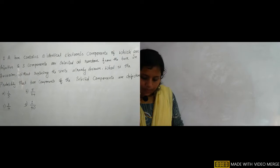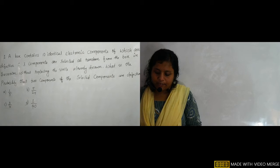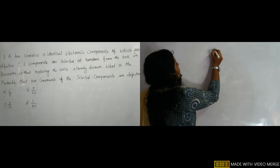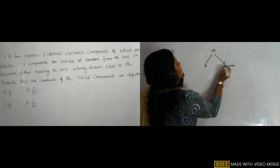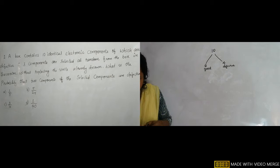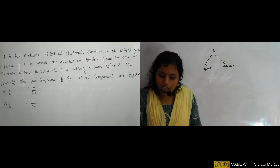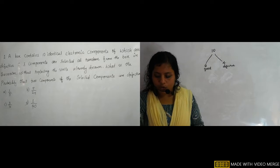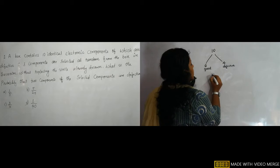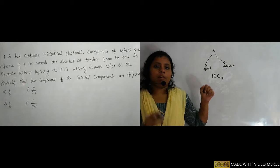A box contains 10 identical electronic components, of which four are defective — meaning six are good. If three components are selected at random without replacement, what is the probability that two of the selected components are defective? From 10, the number of ways to draw three is 10C3.